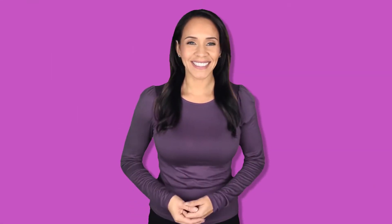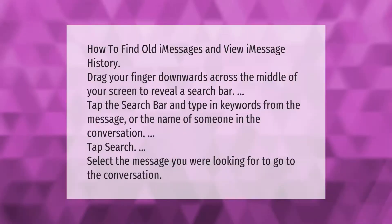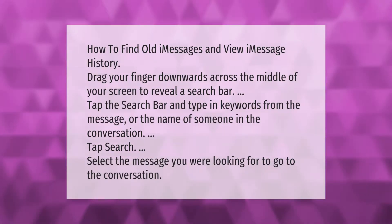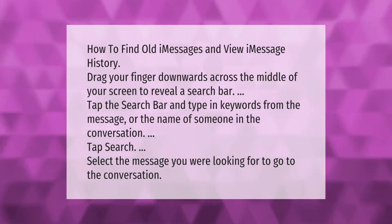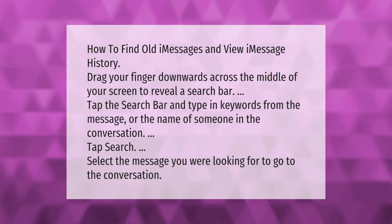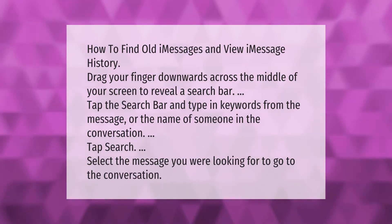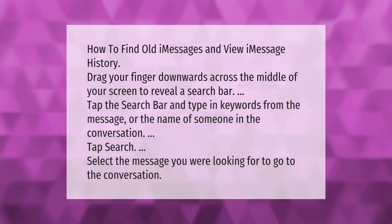How to find old iMessages and view iMessage history: drag your finger downwards across the middle of your screen to reveal a search bar. Tap the search bar and type in keywords from the message or the name of someone in the conversation. Tap Search, then select the message you are looking for to go to the conversation.